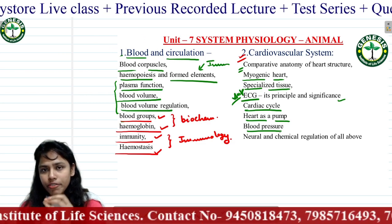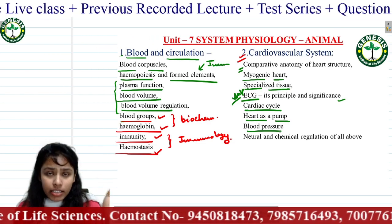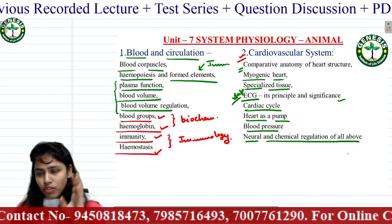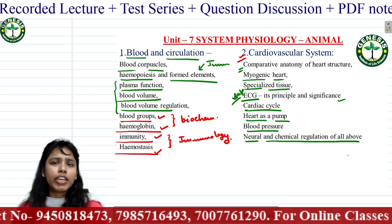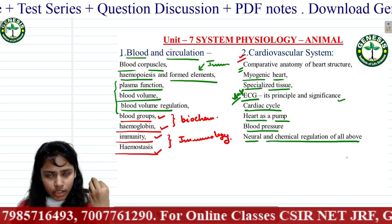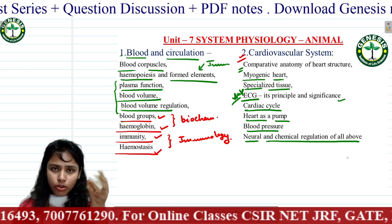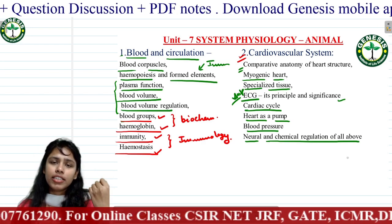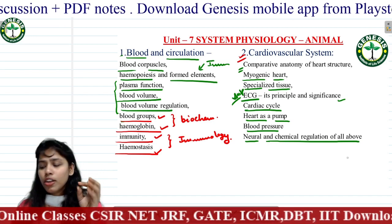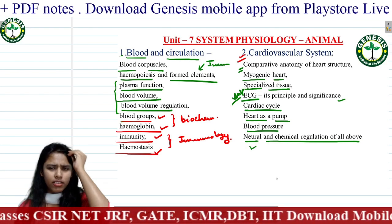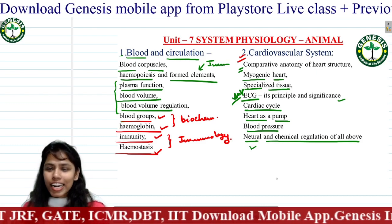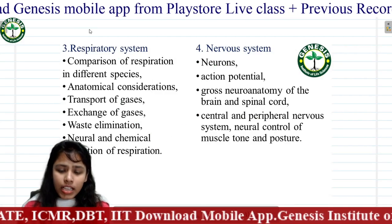You will learn about blood pressure — whether it works against or in favor of vessel walls. Then there is the regulation of all these things on the basis of neural and chemical activity. I want to note that neural and chemical regulation will appear in every system — excretory, digestive, nervous — so you will study it again and again.